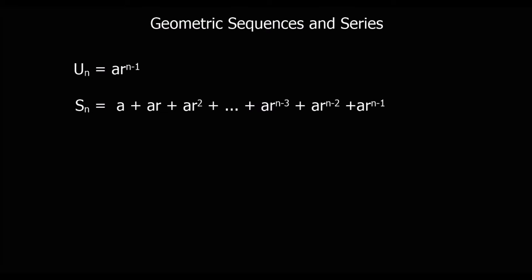The sum of n terms — Sn — that's how we write the sum of n terms. The sum of n terms is: a is the first term, ar — so you multiply by the common ratio — then you multiply by the common ratio again to get the next term, and so on. It goes all the way up to ar^(n-1), which is the last term of the series.